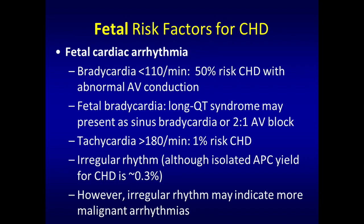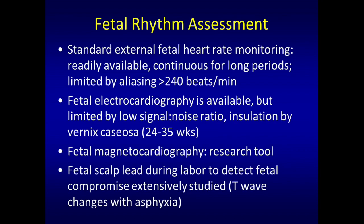How do we assess the rhythm? It's a little bit hard to do. The standard obstetrical fetal heart rate monitors strapped on the abdomen are really good at physiologic heart rates, but once you get over around 220 to 240, you lose the ability to discern the rhythm — you can only tell that it's fast. Fetal ECG is technically difficult, and the Vernix Caseosa is actually a great insulator, which significantly affects your ability to detect the fetal electrical signals.